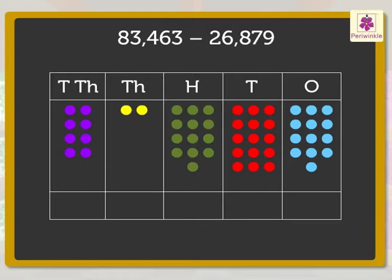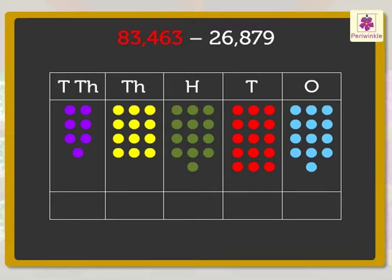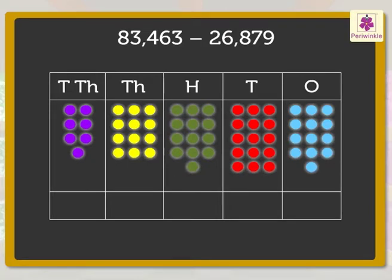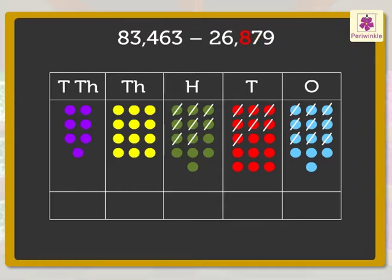In the hundreds column, we cannot subtract eight from three, so we regroup one thousand to ten hundreds. Now let us cancel 9 blue dots, 7 red dots, 8 green dots, 6 yellow dots and 2 purple dots.